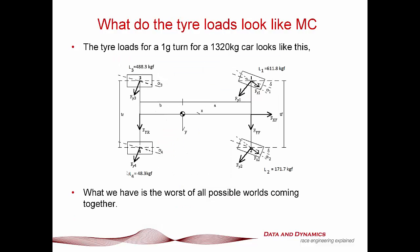The challenge we're dealing with in front wheel drive: for a typical car doing a 1G turn, weighing about 1,320 kilos, with a 50-50 weight distribution, the outside rear tyre load is 488.3 kgf, the inside rear is 488.3 kgf, the outside front tyre load is 611.8 kgf, and the inside front is 171.7 kgf. You're loading that outside front tyre and getting it pretty close to its saturation point, and when you hit the accelerator to get out of the corner, you're presented with a very tricky set of circumstances.